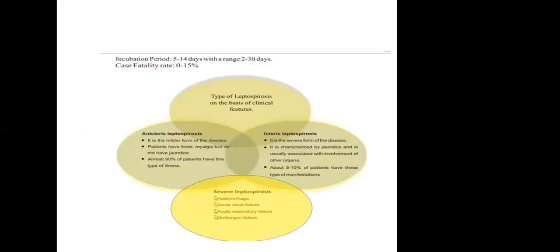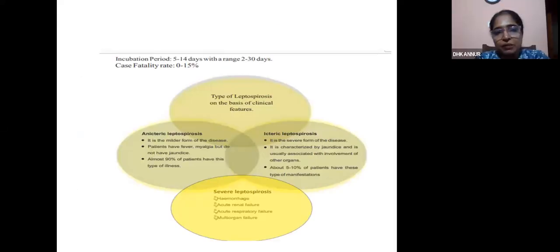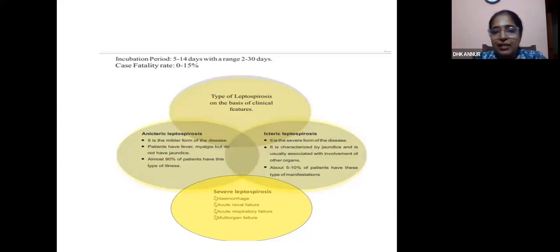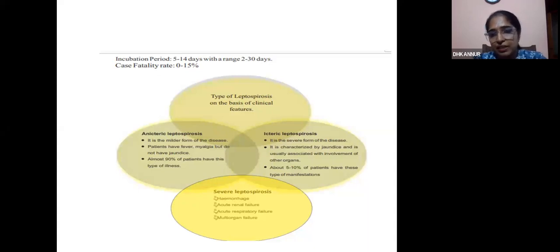If we see the clinical features, the incubation period is 5 to 14 days, but it can range from 2 to 30 days. The case fatality rate is 0 to 15 percent. Clinically, we have anicteric leptospirosis, icteric leptospirosis, and Weil's disease.